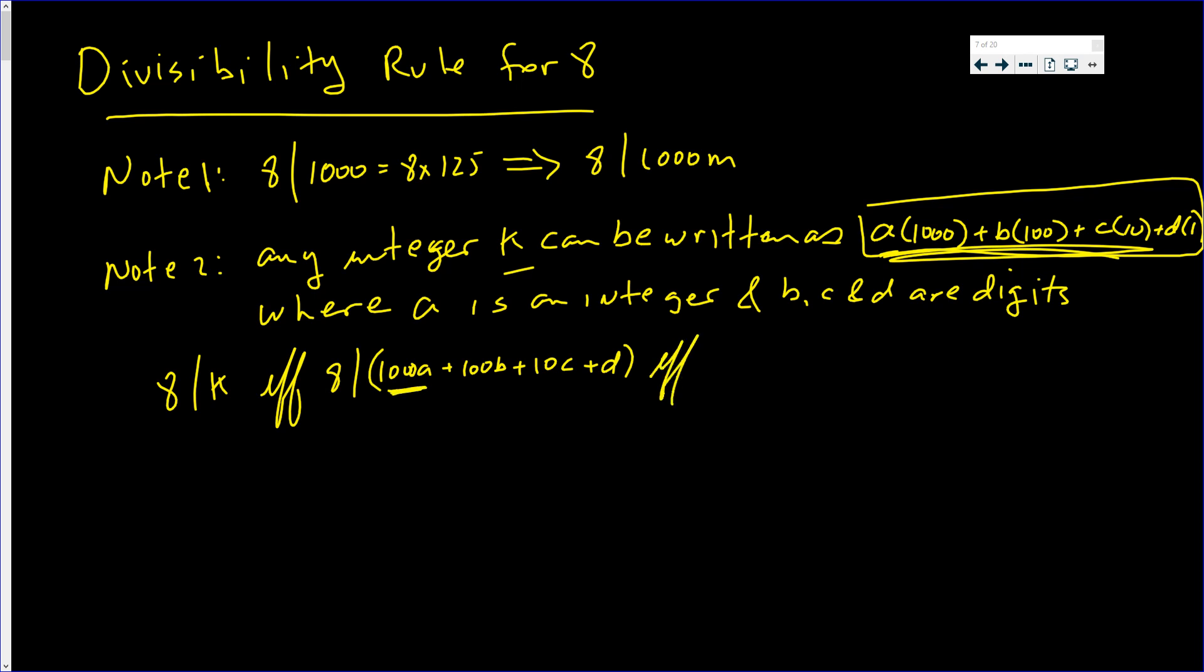So, 8 is going to divide the whole number if 8 divides the rest. If and only if 8 divides 100B, plus 10C, plus D. But this is the last three digits of a number. You have the hundreds place, the tens place, and the ones place.